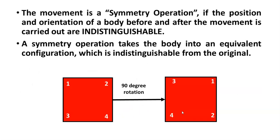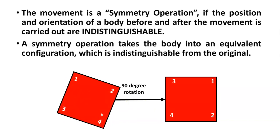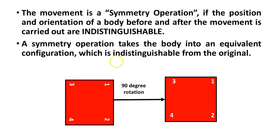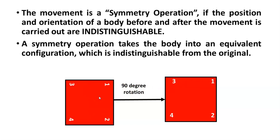We will understand this with a square. We have a square here with the edges marked with numbers, and if I carry out an operation of 90-degree rotation, you can see that the square returns back to the original shape, but with the numbers on, you can say that it is not the original position. So the resultant position is called an equivalent position because the shape is not changed but the position of the edges has been changed.